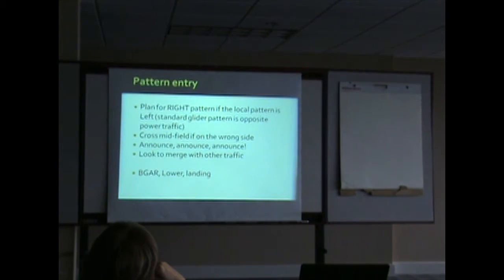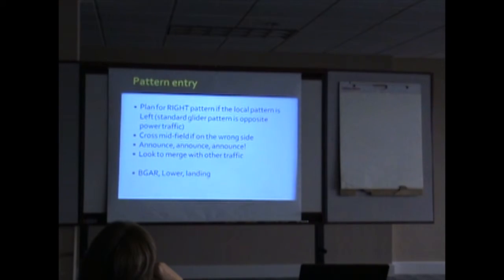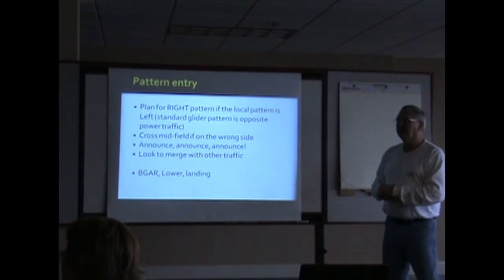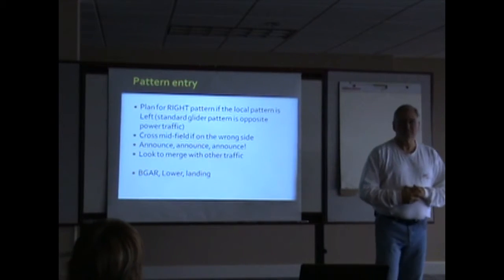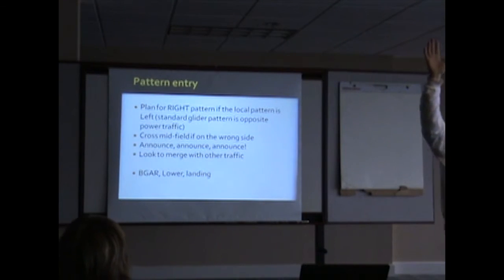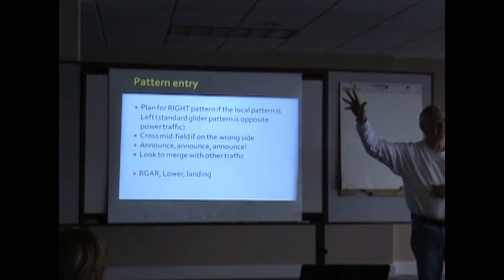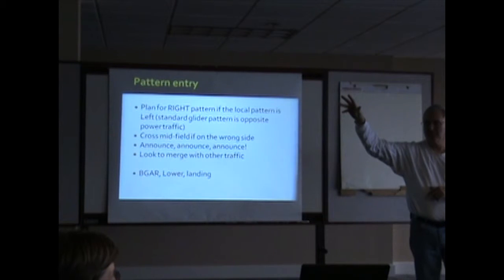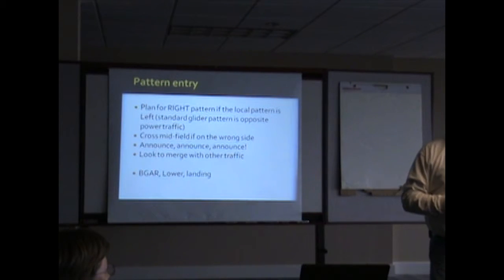Okay, our pattern, according to the AIM, is right traffic unless otherwise specified. Cross midfield, if you're on the wrong side, announce, announce, announce. Tell them what you're doing. Left is standard unless otherwise specified. Left is standard for power traffic. Right is standard for gliders. Right is standard for gliders, unless for some reason there's a specific clarity why that would be. Always look to merge with air traffic. Remember, what's big R? Who remembers what big R is, besides the instructors? It's the priority of air traffic. Balloons, gliders, airplanes, rotorcraft. Who has right of way? The answer is, if there isn't a balloon around, it's probably you. So if there's somebody that's going to get in your way, and they're in a power plane, say, I am a glider, I need priority. Because they can go around, you can't. Keep telling my students, that's why we can land so well.